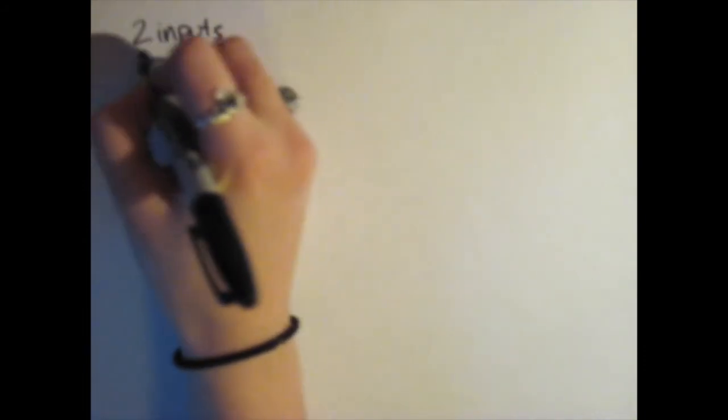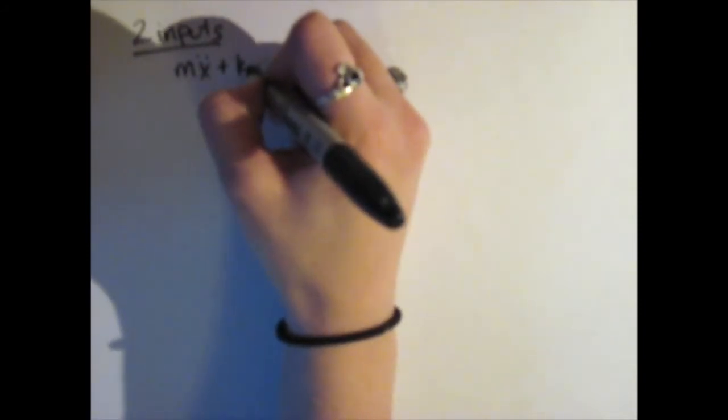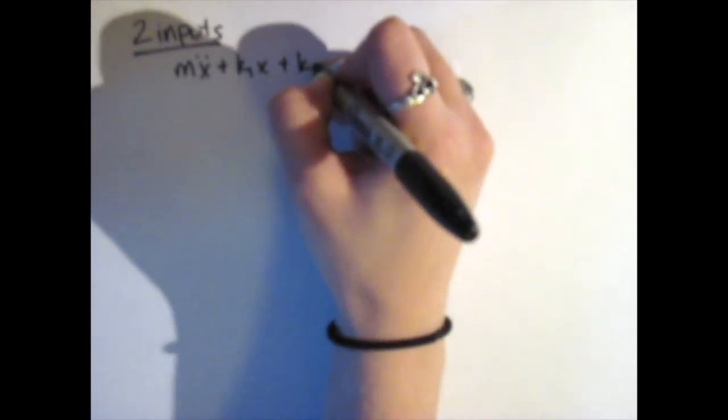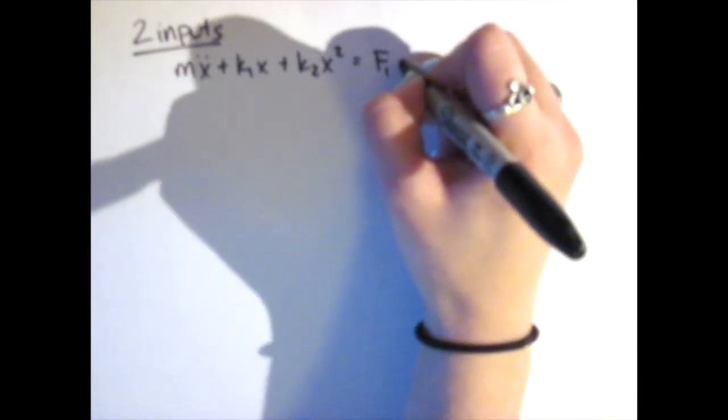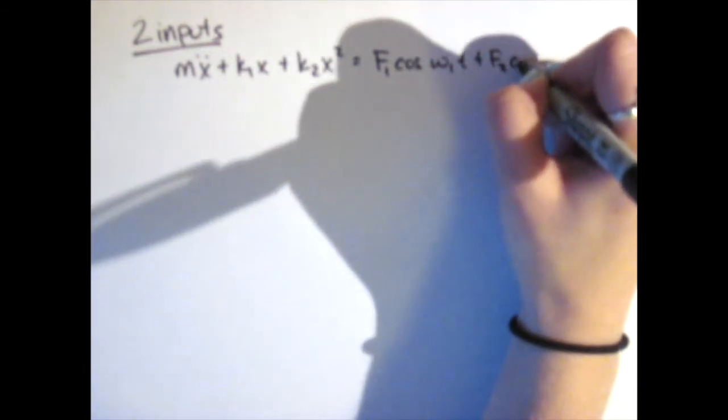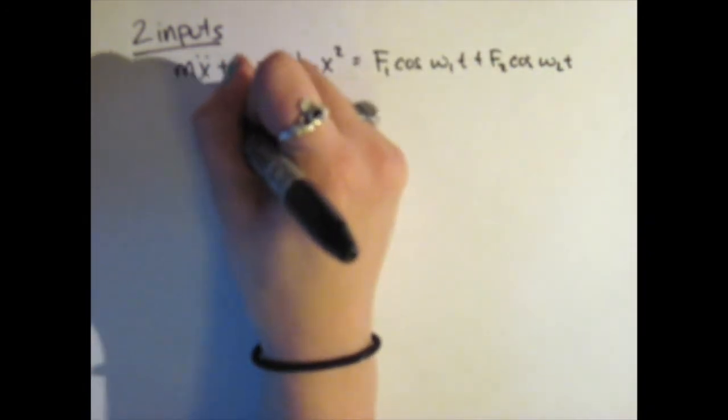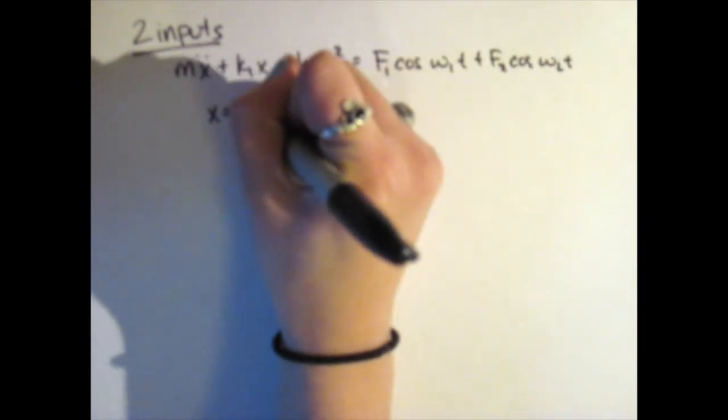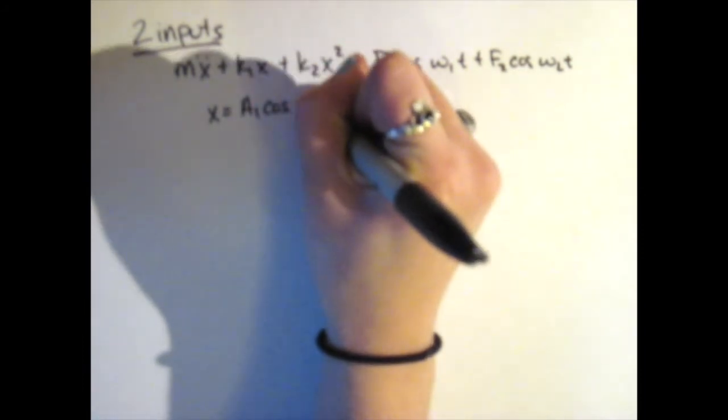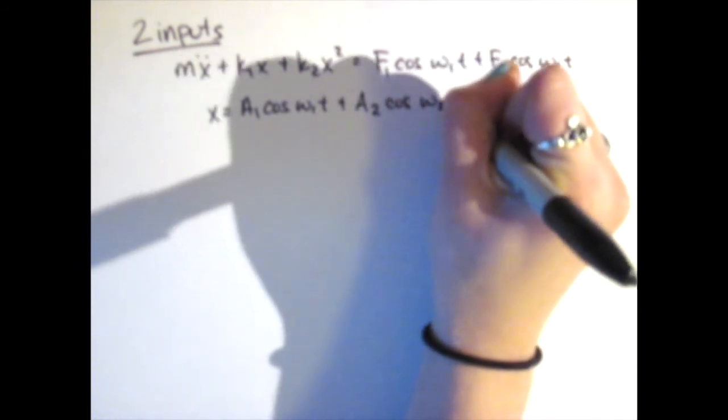But remember, we're looking at a two-part harmony. So we'll have two inputs, which means our equation looks as follows: mx double dot plus k1x plus k2x squared equals F1 cosine omega 1 T plus F2 cosine omega 2 T.